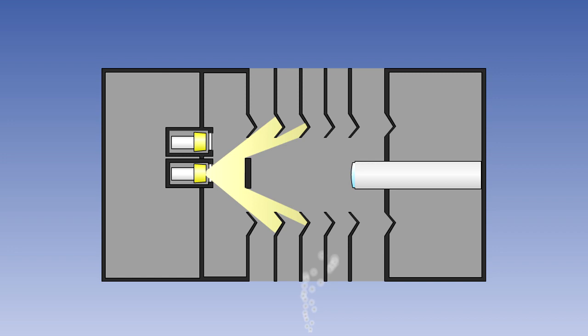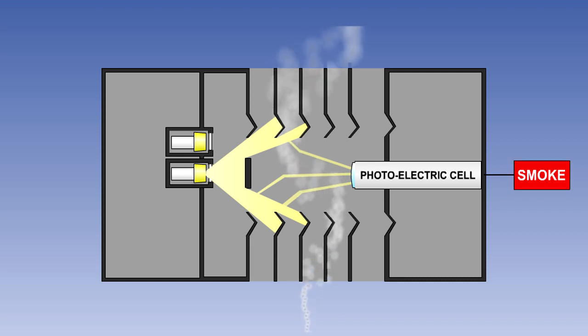If smoke enters the unit, it will scatter the light. This will cause some light to be seen by the photoelectric cell. The cell will now produce an output, which will trigger an alarm.